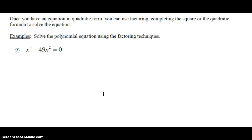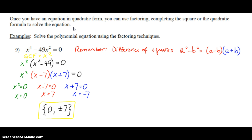Let's take a look at example number nine. The instructions say once you have an equation in quadratic form, you can use factoring, completing the square, or the quadratic formula to solve. Now we're going beyond just rewriting in quadratic form — we're going to solve equations. On number nine, you're going to need to do a difference of squares factoring once you pull out the GCF. Pause the video and check your answer in a minute. Our answer to number nine is a solution set containing zero, positive seven, and negative seven. Remember we can write in shorthand plus or minus seven to show both values.